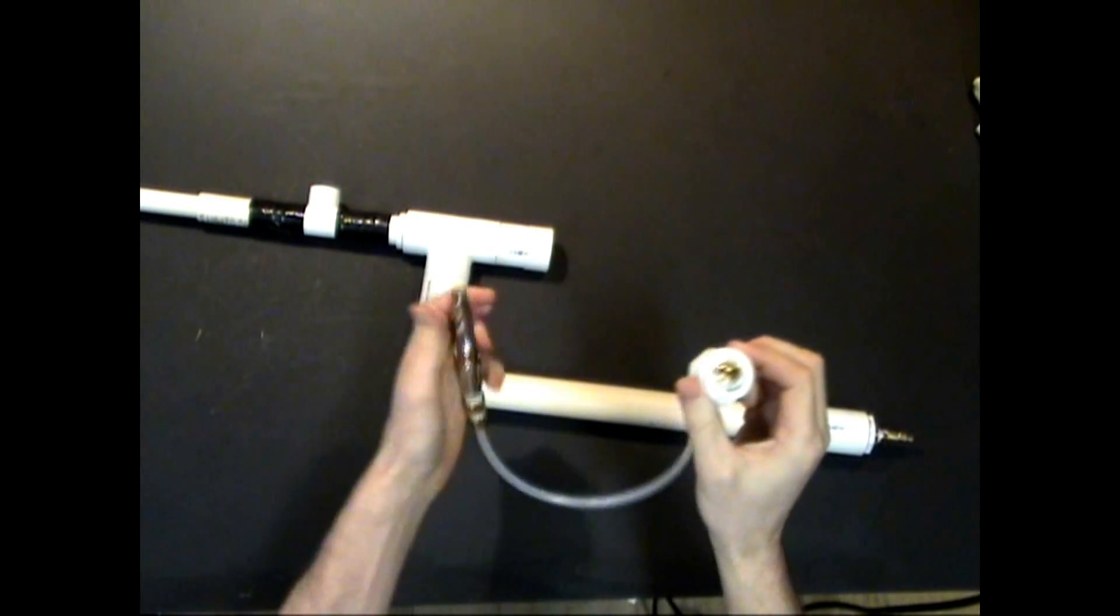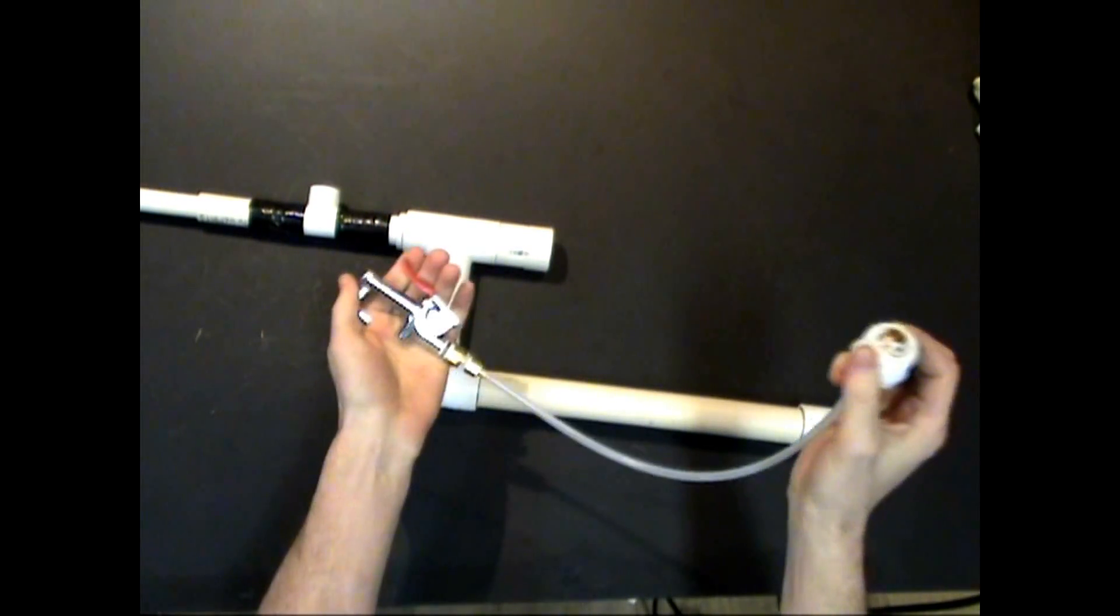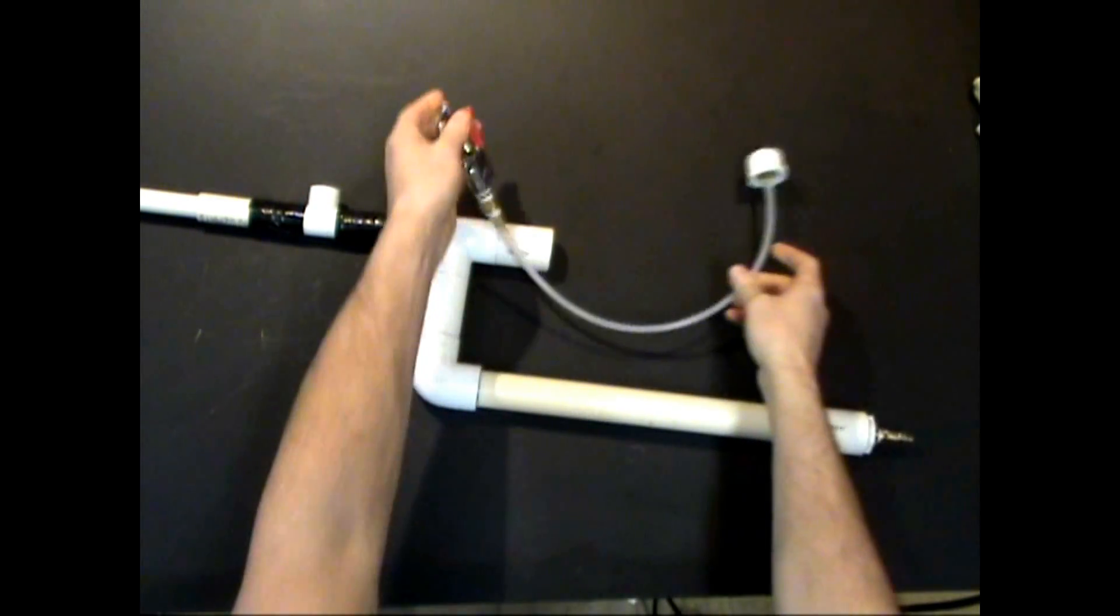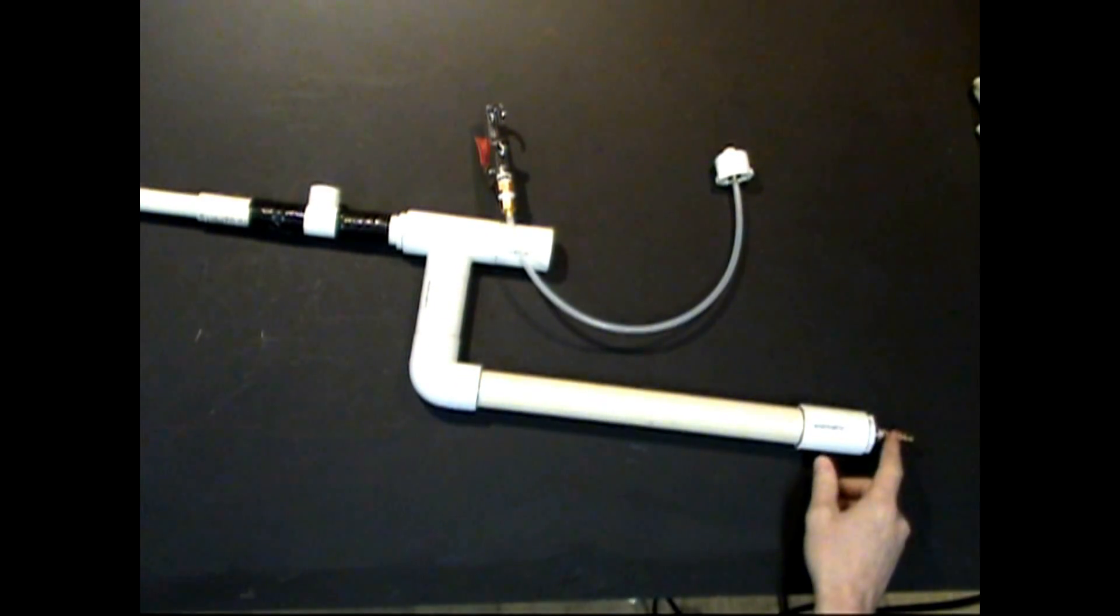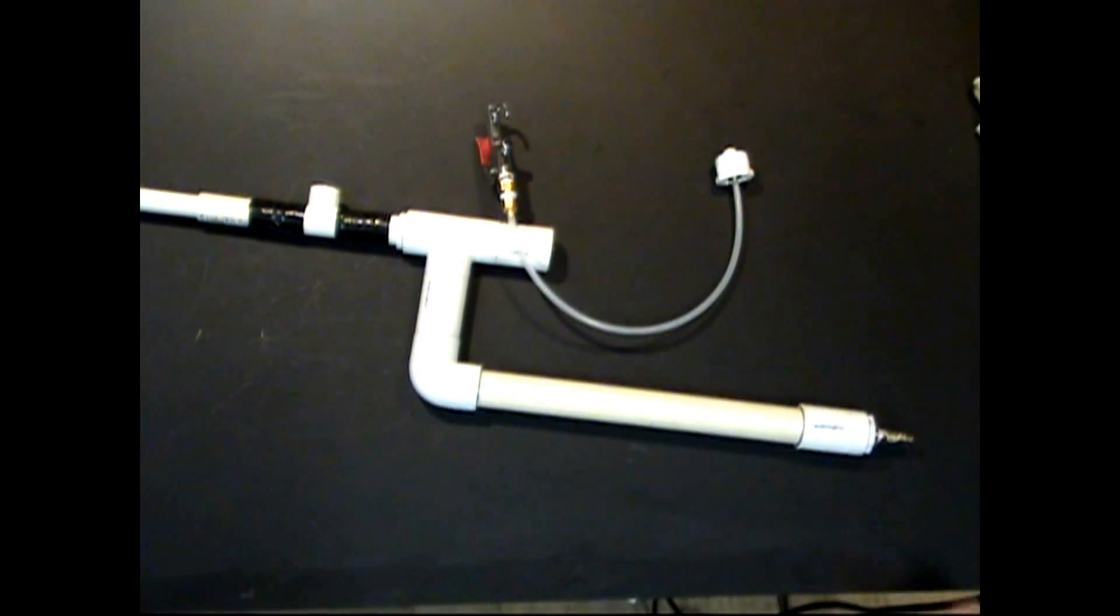For the trigger, I'm using a blow gun tool. The pressure chamber goes on this end of the T. This is just 1 inch schedule 40 pipe and fittings, which I shaped to look something like a gun stock. The end is fitted with an air compressor quick release coupler.